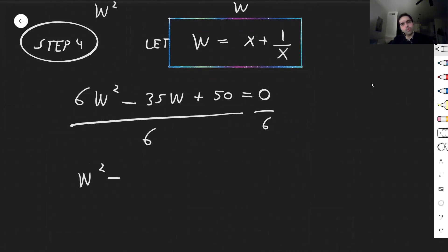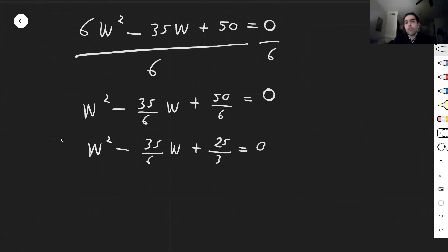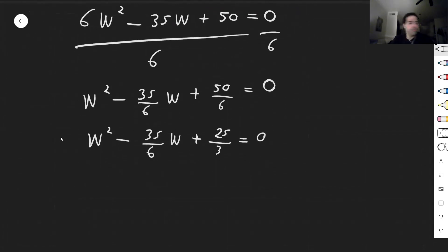And then so we get w squared minus 35 divided by 6w plus 50 divided by 6 equals 0. And so w squared minus, again, 35 over 6w plus 25 over 3 equals 0. And now use the quadratic formula. I'm just skipping this step. But you can actually show that this is w minus 5 halves times w minus 10 thirds equals 0.